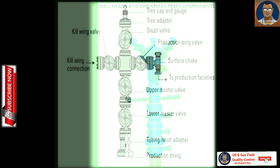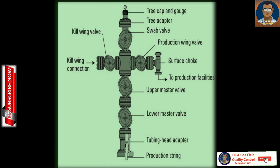The christmas tree is mounted over the wellhead. The christmas tree's primary purpose is to control the flow of resources — typically oil or gas — into and out of a well during production. The christmas tree is attached to the wellhead after finalizing the drilling process. It is basically a series of valves, spools, gauges and chokes — it has branches like a tree, which is why it is termed the christmas tree. A total of five valves are included in a christmas tree.